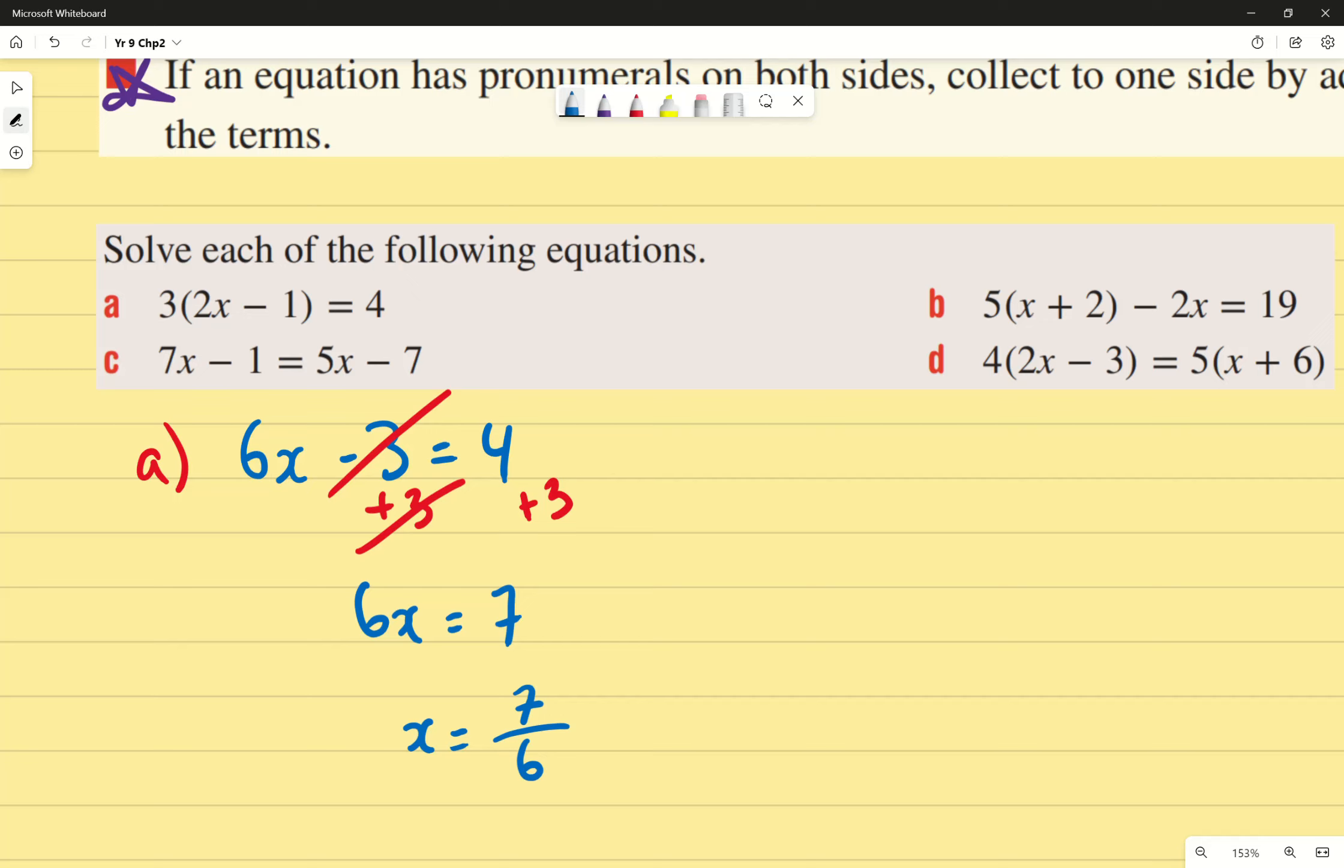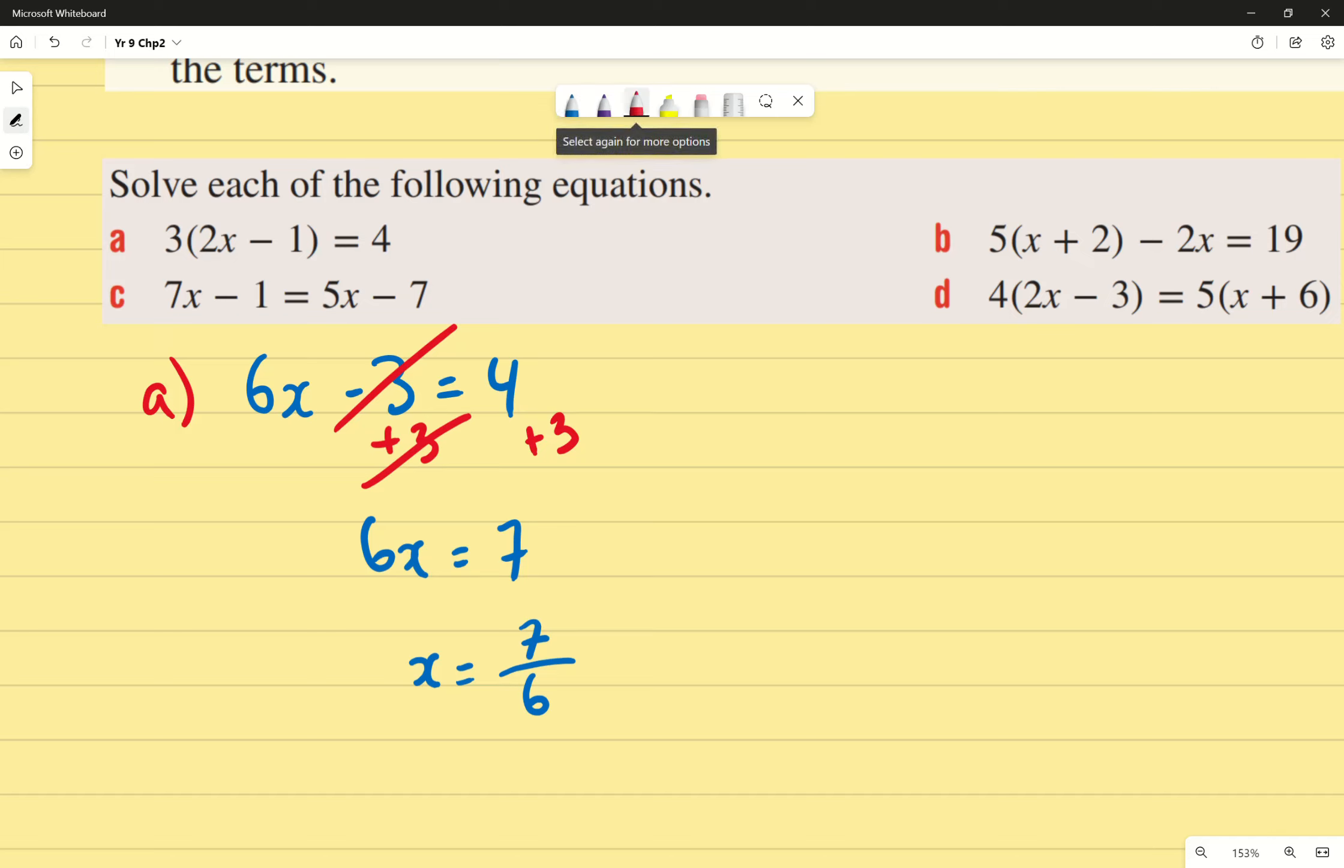Let's move on to question C. We're getting a little bit trickier. Question C. It says we've got 7x minus 1 equals to 5x minus 7. The tricky part here is that the x is on both sides. I'm going to rewrite the question here. You don't need to rewrite the question twice of course. Just once will do. Okay.